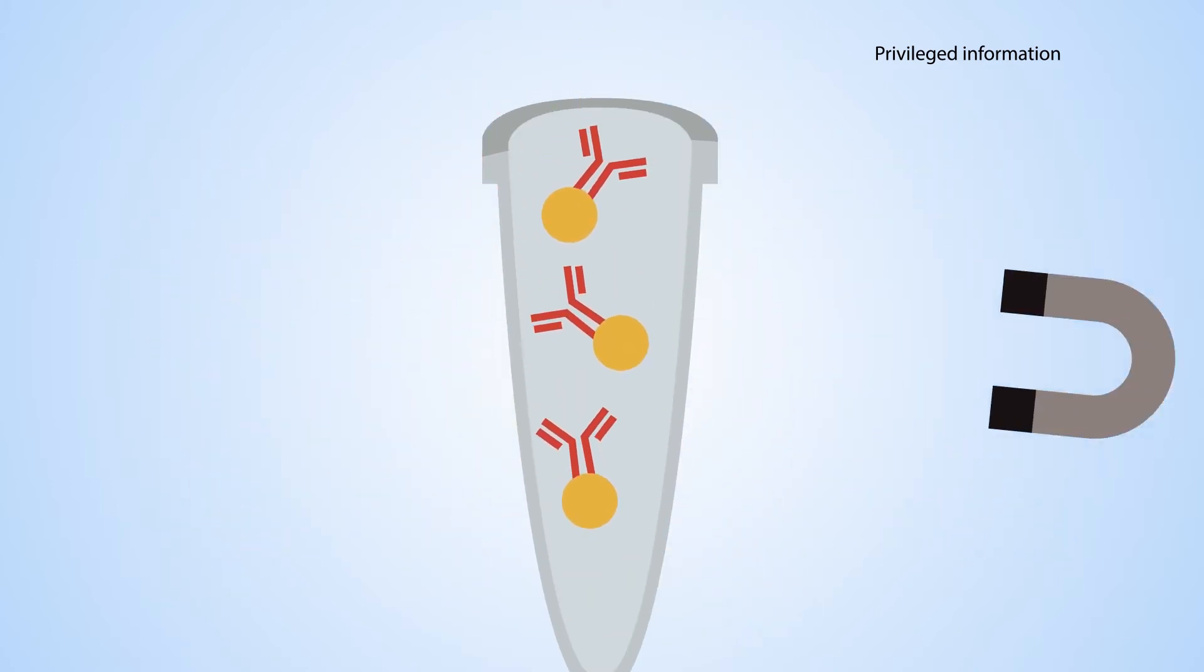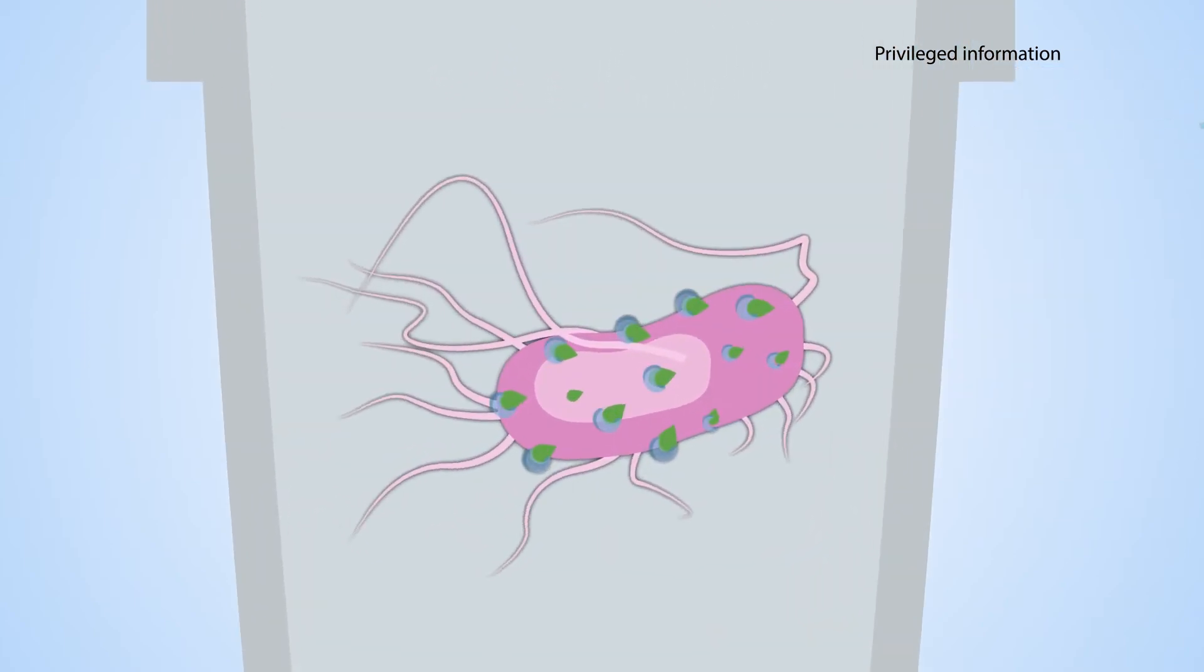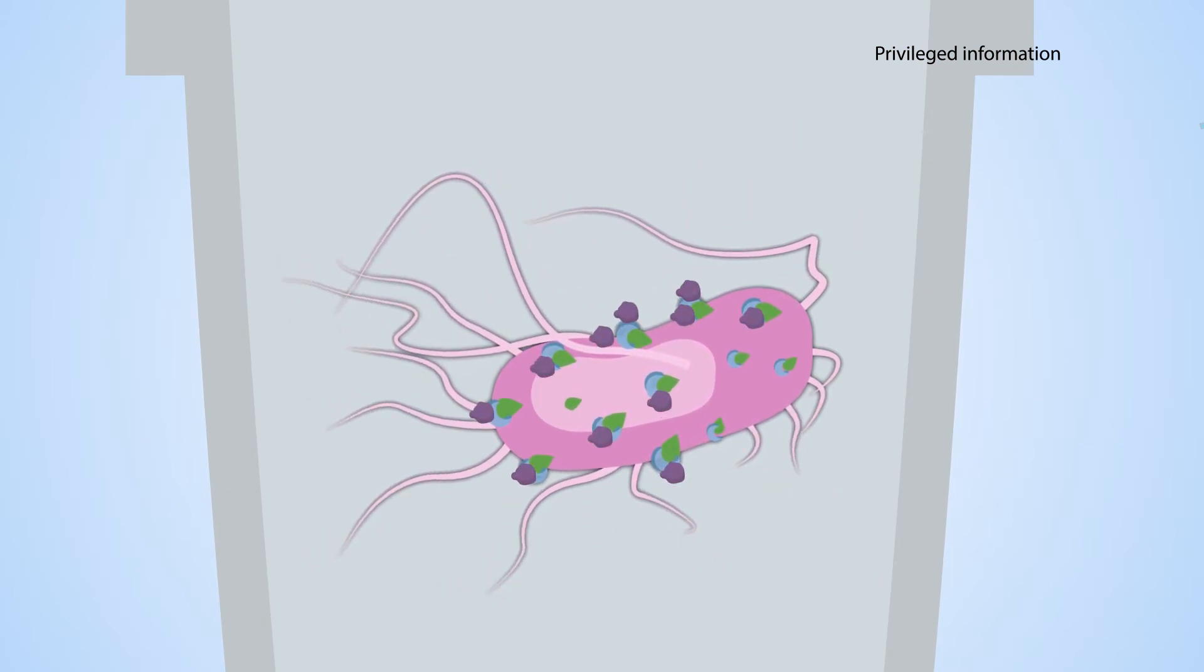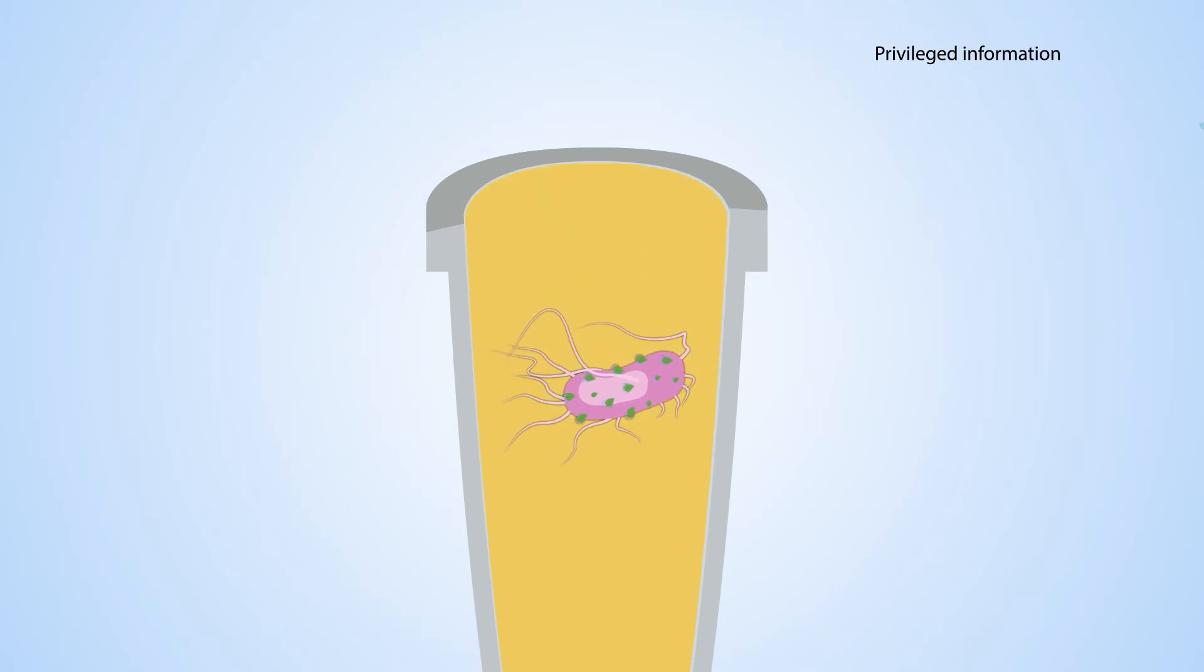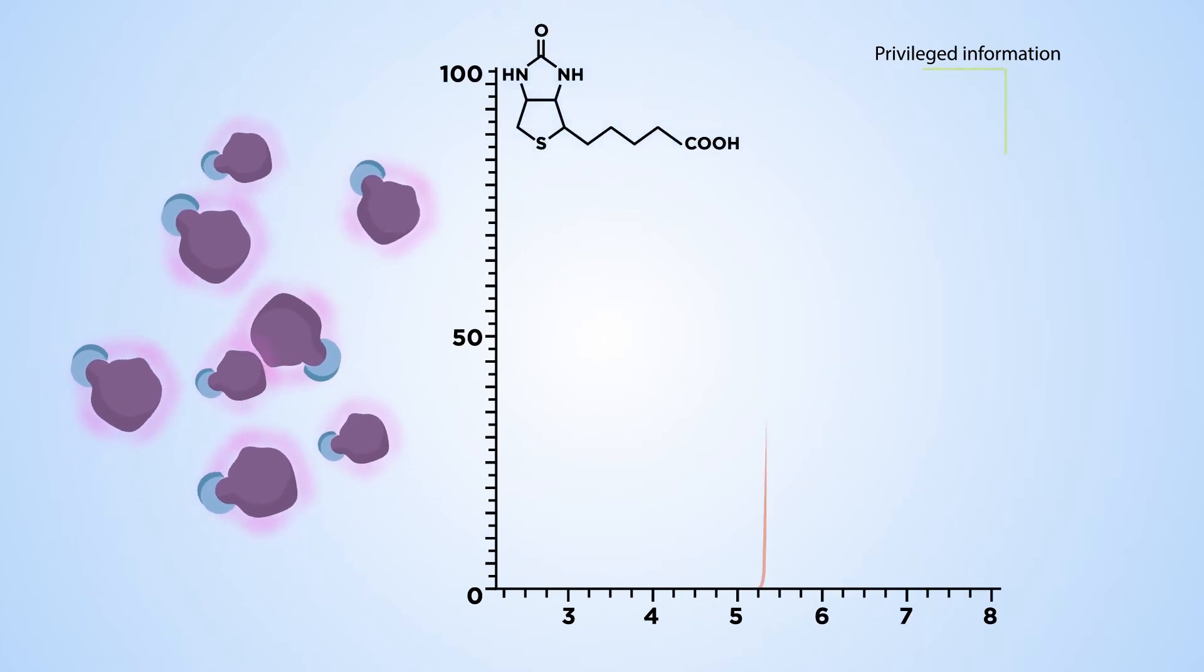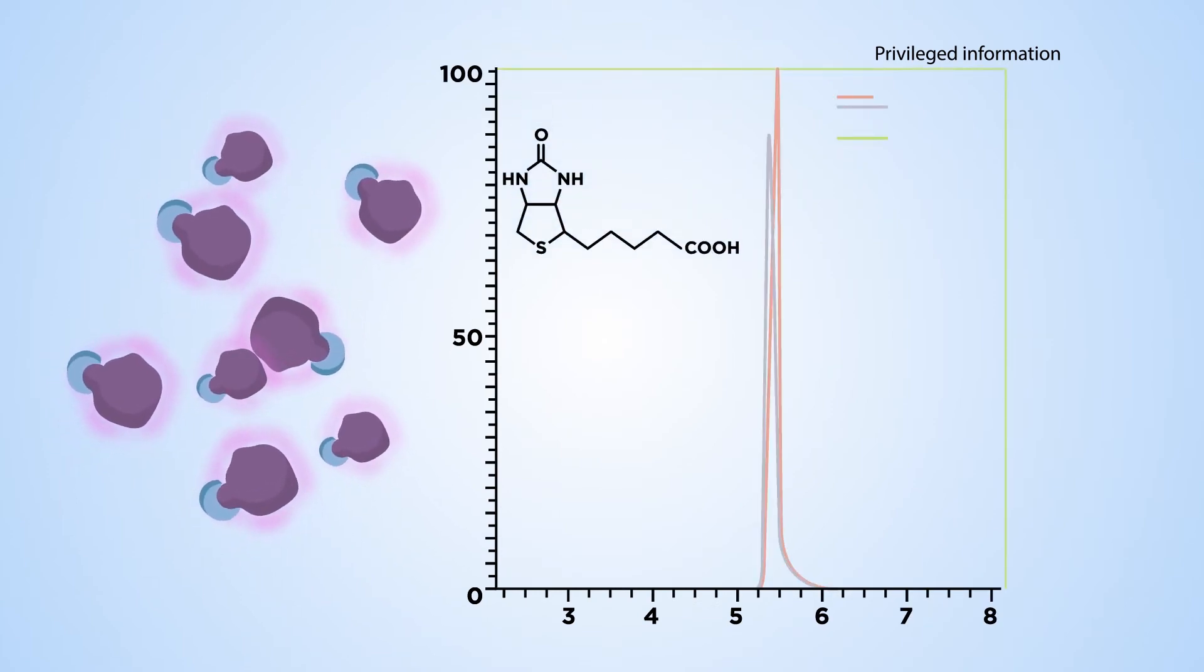It starts with a variation on affinity pull-down assays. In this version, the researchers express tagged proteins in a variety of cell models so it can rapidly and efficiently capture proteins and their associated metabolites mid-interaction. The protein-metabolite complexes are then eluted and identified using liquid chromatography mass spectrometry.